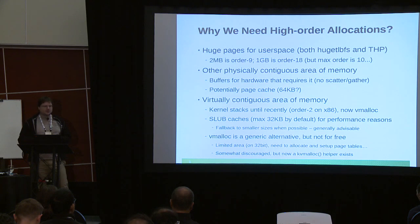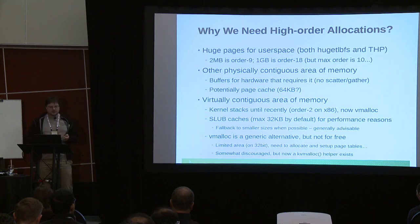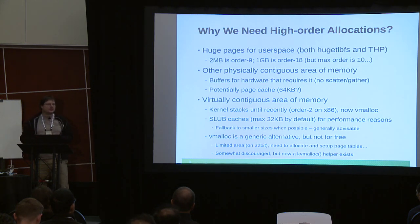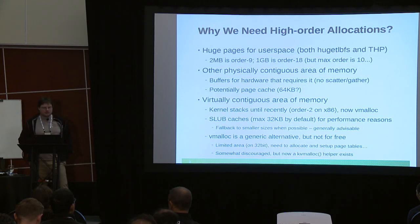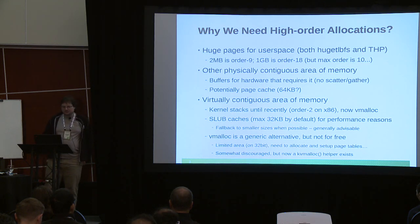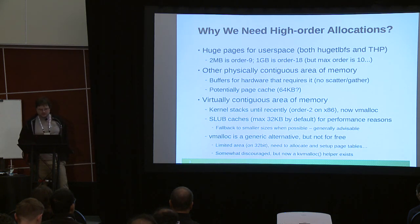It's better if you can avoid needing a large contiguous area of memory at all, but if you need it, we now have a new kvmalloc helper that will first try the higher-order allocation and if it fails, falls back to vmalloc and handles all the GFP flags magic for you so you don't get spurious warnings.